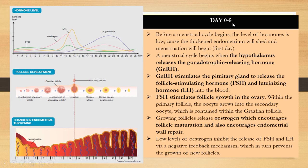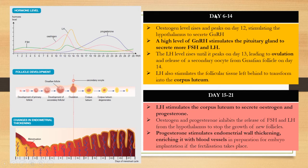To summarize Day 0 to Day 5: FSH and LH are released into the blood. FSH stimulates follicle growth in the ovary, and the low-level estrogen secreted by the follicle encourages repair of the endometrium wall.